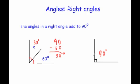The angles in a right angle add to 90 degrees. They're sometimes shown with a little square box, and if you're given one angle in a right angle, to find the missing one you would take the angle they give you away from 90 degrees.